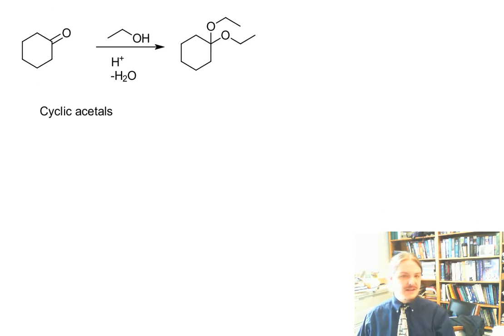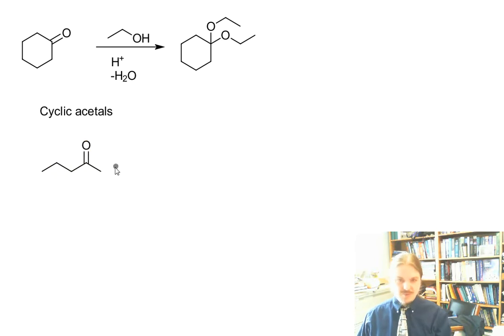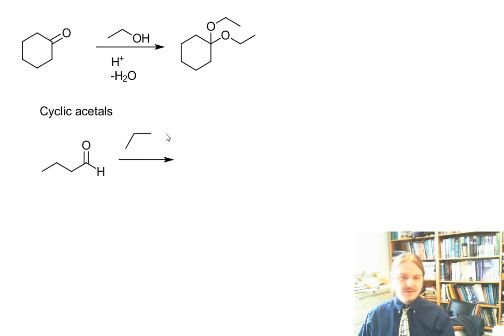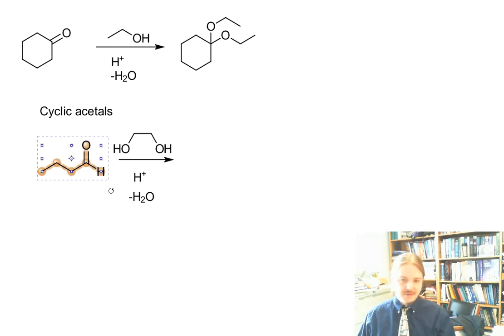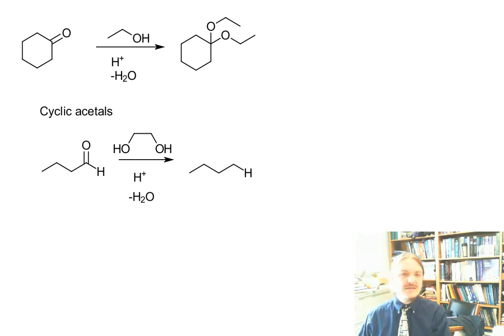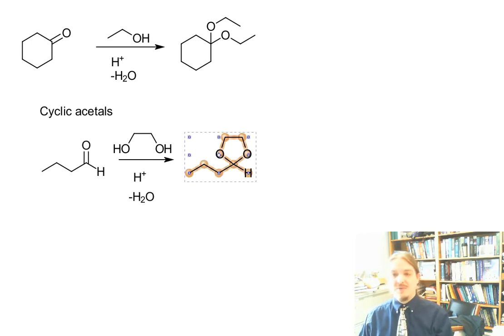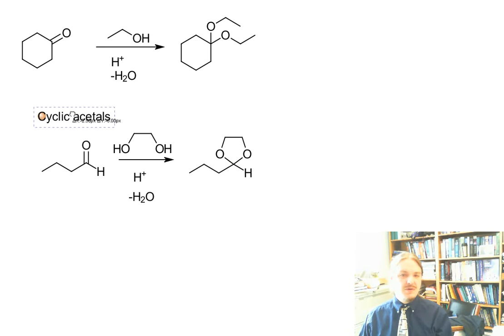It is possible to have cyclic acetals. Let's look at propanediol. It is possible that the two alcohols required for an acetal can actually come from the same molecule — they can be attached to each other. There are sometimes desires to do this because when the two alcohols are connected, the equilibrium actually favors the acetal a little bit more than it does if there are two separate alcohol molecules.